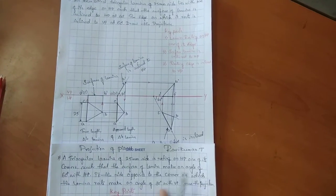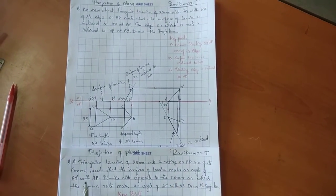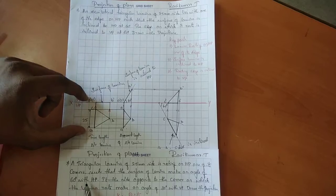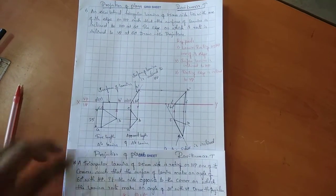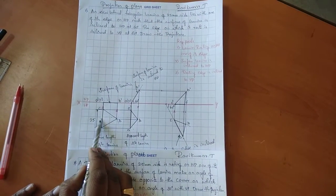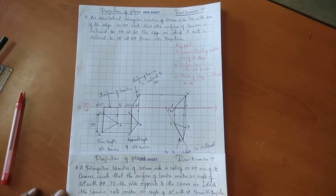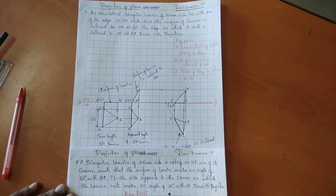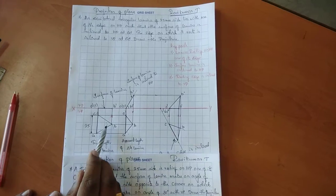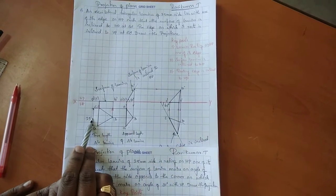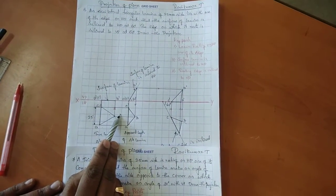Next problem: the lamina resting on HP with one of its corner. See this problem — the lamina resting on HP with one of its edge. This is the edge and this one is the corner. Now, how to take the first position if the lamina is resting on HP with one of its corner? The corner should be towards your right hand side and the edge should be towards your left hand side.